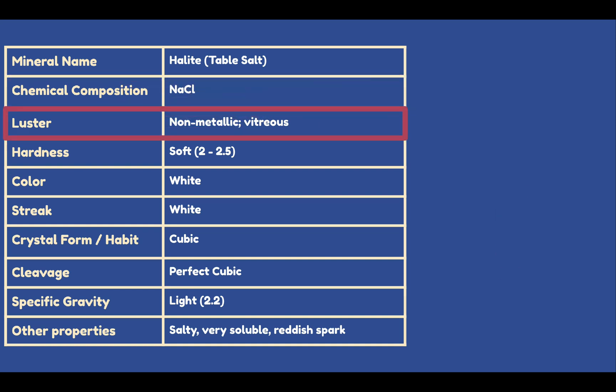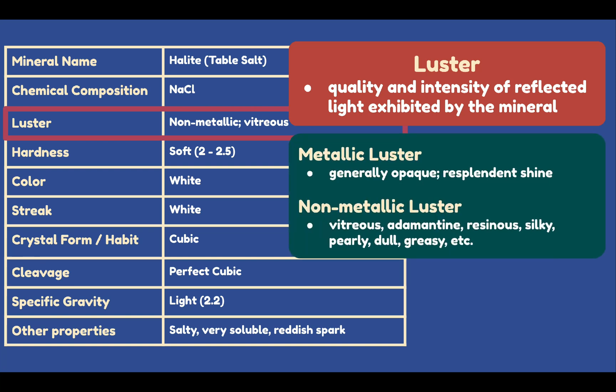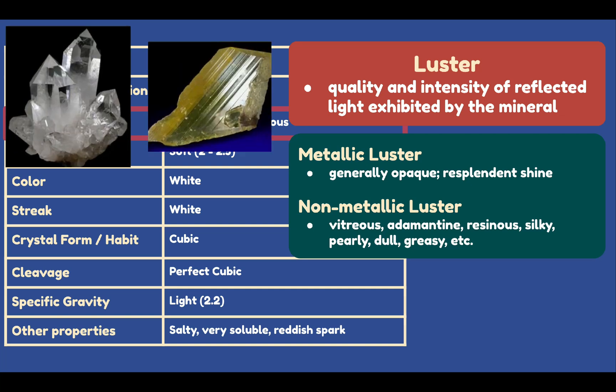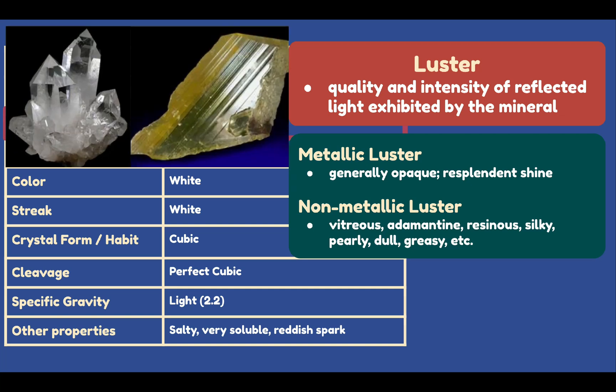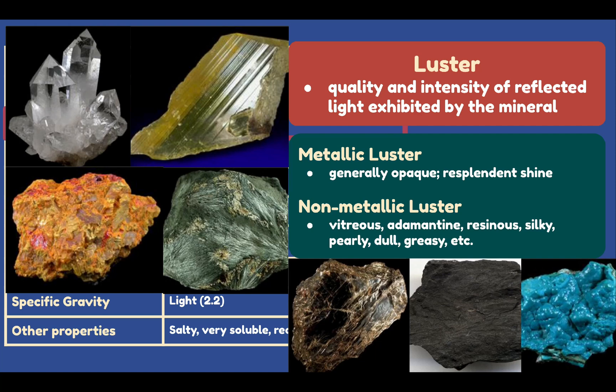Here we have luster. Halite has a non-metallic vitreous luster. Luster is the quality and intensity of reflected light exhibited by a mineral, and we have two kinds: metallic luster and non-metallic luster. Metallic is generally opaque and exhibits a splendid shine similar to a polished metal. Non-metallic could be vitreous (glassy), adamantine (brilliant or diamond-like), resinous, silky, pearly, dull, or greasy, among others.